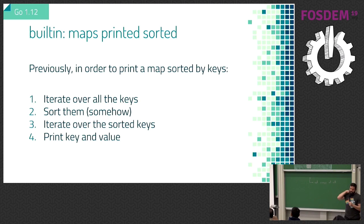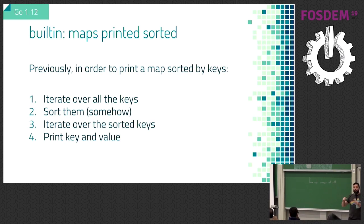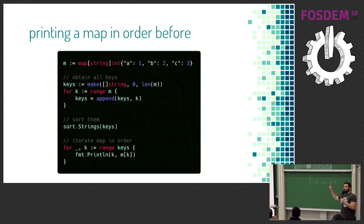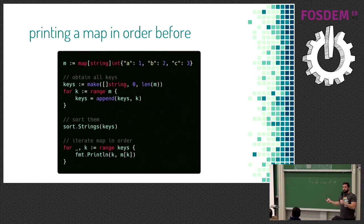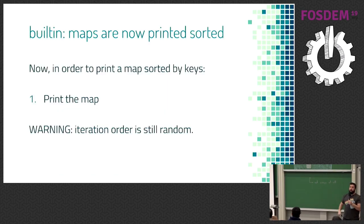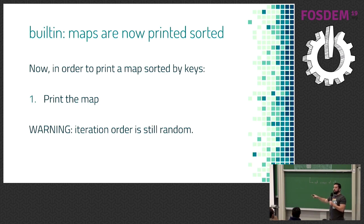If you print maps, they will be sorted — but don't be too happy. This only means sorting for printing purposes. If you iterate over a map, the order is still random. Previously to print a map sorted, you had to get all keys, put them in a slice, sort the slice, then iterate. Now you can just print the map and it will work. The main reason is for tests — now when you print two maps, you can compare whether they look exactly the same.